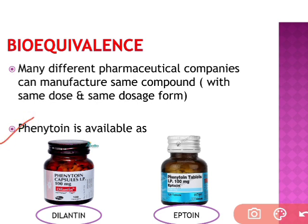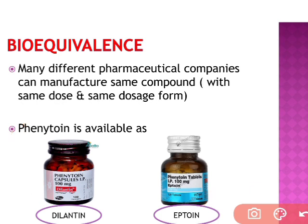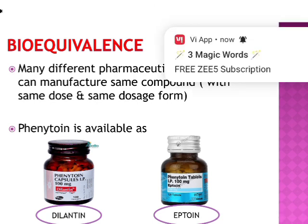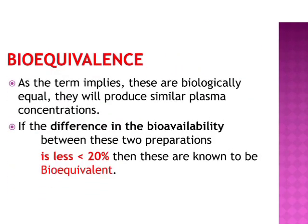Take the example of phenytoin. Phenytoin is available under brand names Dilantin and Aptoin. Dilantin is from Pfizer and Aptoin is from Abbott — two different companies producing the same drug. They are said to be bioequivalent if the difference in bioavailability between these two preparations is less than 20%.